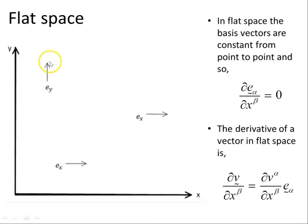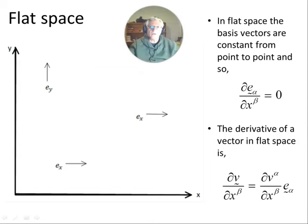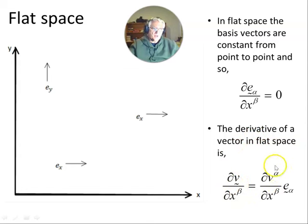In flat space, the basis vectors are the same everywhere — the entire space is one vector space. In R², the basis vectors in the x-direction are constant, and the basis vectors in the y-direction are constant everywhere. You can compare vectors at different points simply by subtracting them. Because the basis vectors are constant from point to point, the partial derivative of the basis vectors with respect to the coordinates x or y is zero.